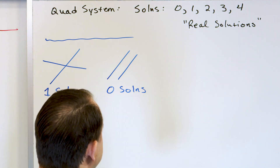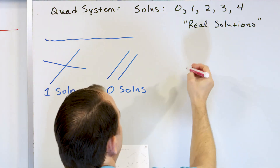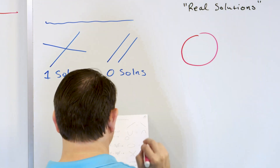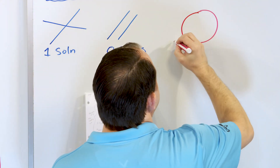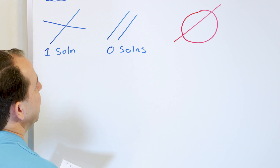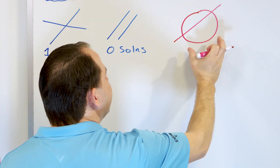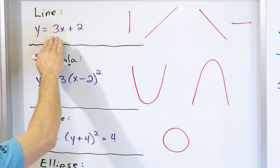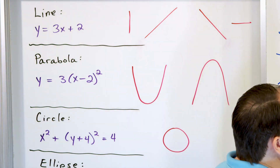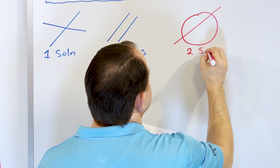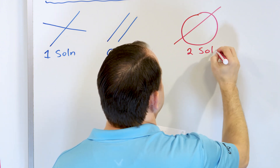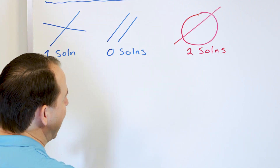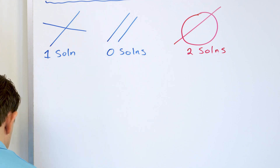Let's crank up the complexity a little bit. What if we have a circle and a line that goes through the circle? A system might have the equation of a circle and the equation of a line right next to it. If I were to plot them, I would see two intersection points — so there are two solutions.